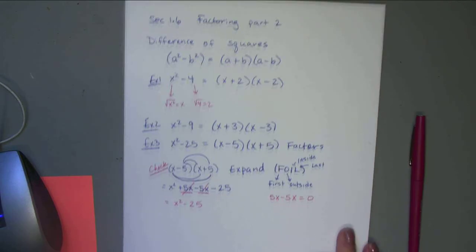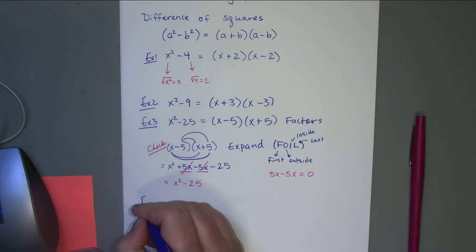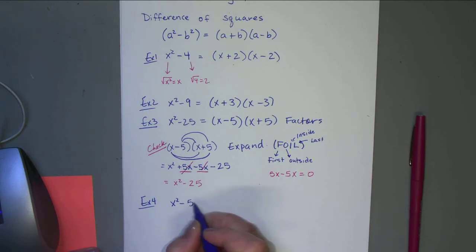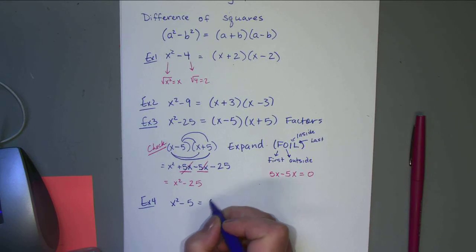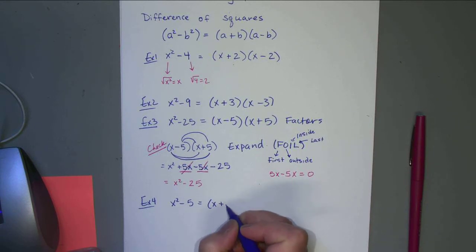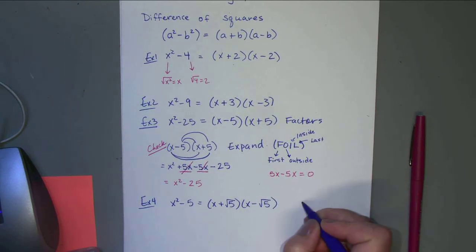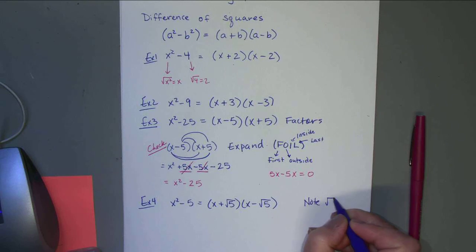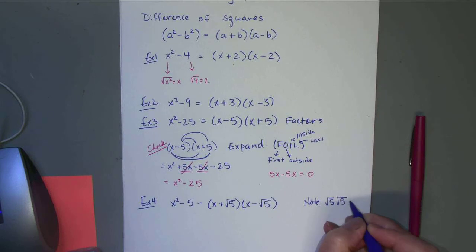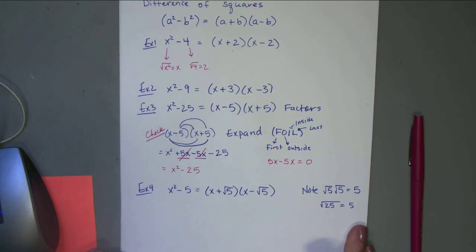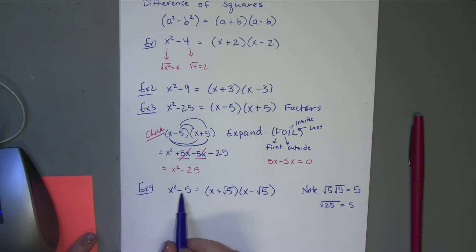Difference of squares also works if you can't get a perfect square root. For example, if you had x² minus 5, the square root of 5 doesn't work out nicely, but you can write this as (x + √5)(x - √5). Note that √5 × √5 = 5. So you actually don't need something that works perfectly.